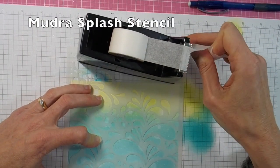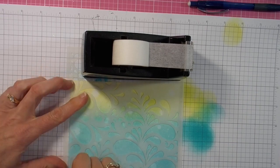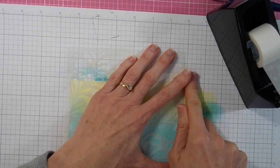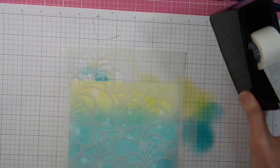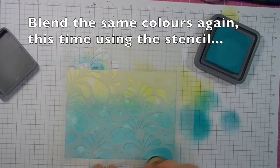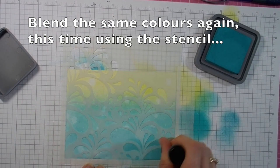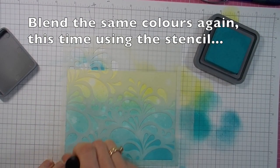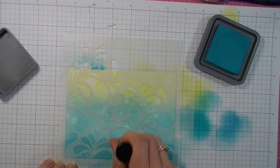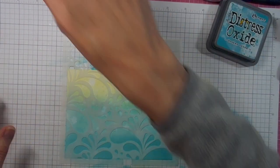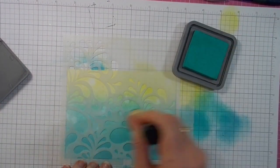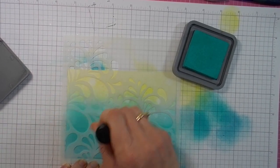Taping my Splash stencil down over the top, and then you'll see me ink blending again over the top of the stencil using the same Distress Oxide colors over the same spots. So it was Salty Ocean along the bottom, and then I'll follow that up with Peacock Feathers, blending right over the top of the Splash stencil there.